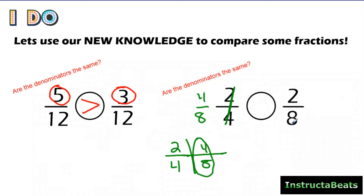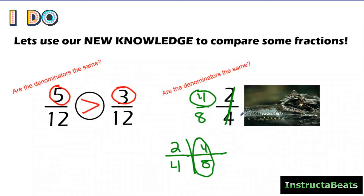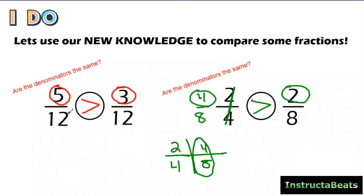You could have also done this using multiplication — I just like the pattern method because it's quick and easy. Now my denominators are the same, so I can look at the numerators. What's bigger, four or two? Four-eighths is bigger than two-eighths, so we would say four-eighths is greater than two-eighths. Think about an alligator — it's going to want to eat the bigger number, so that wide mouth should be facing the bigger number.